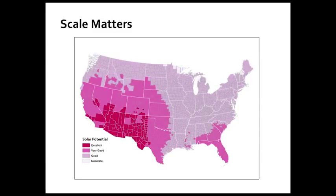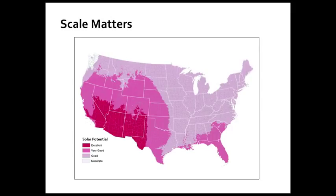Now let's look at the same data at the county level, and we get a totally different picture. Some counties in South Carolina look pretty good, one county in Montana looks decent, some counties in New Mexico aren't in the perfect category, and even eastern Texas is only rated good. Looking at the original gridded data from NREL — from which everything else was derived — there are places in southeastern Montana that look quite good, but they get washed out when averaged to counties, and further washed out when averaged to state level. This is a clear example of how scale matters when making decisions with geographic data.